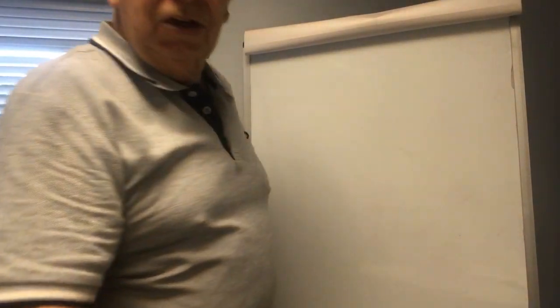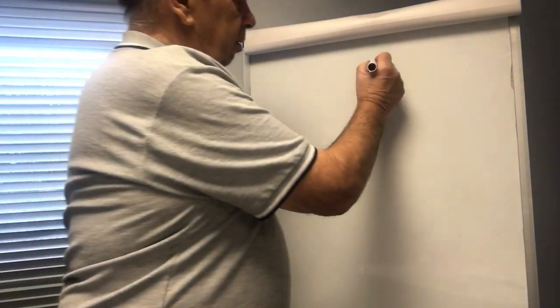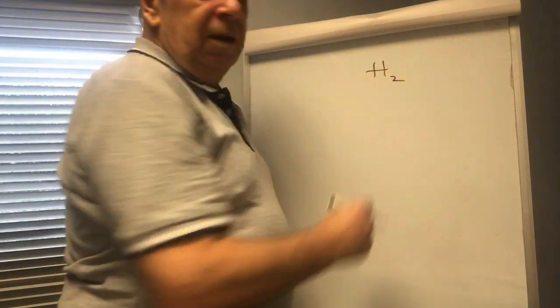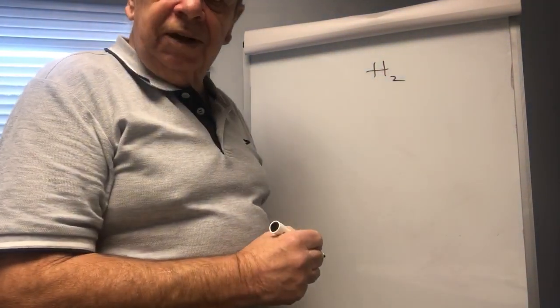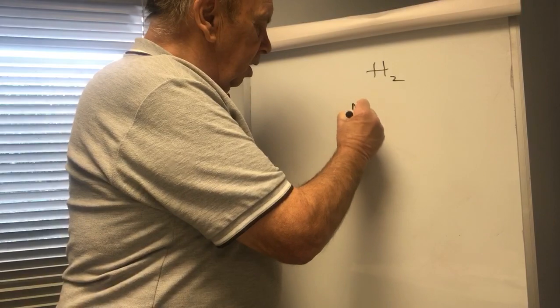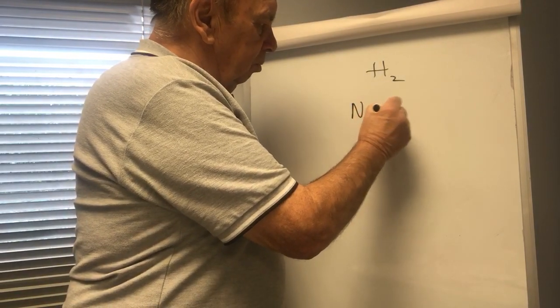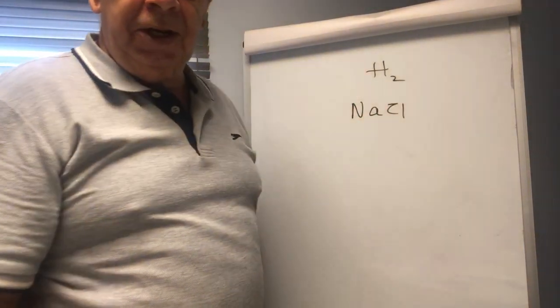So if I took an example, hydrogen is a gas at room temperature. There he is. And I took another example of say a solid, sodium chloride, NaCl.